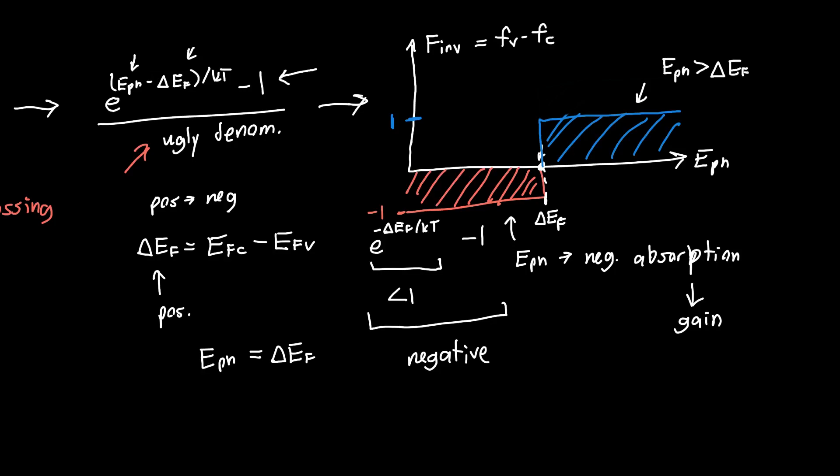Whether we get absorption or gain is determined by this quantity, the Fermi level splitting, ΔEF. This is a central quantity of importance in optoelectronics, and this is what we're going to spend the next few videos exploring.